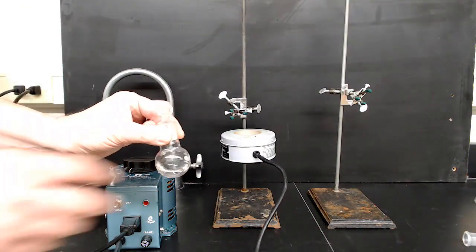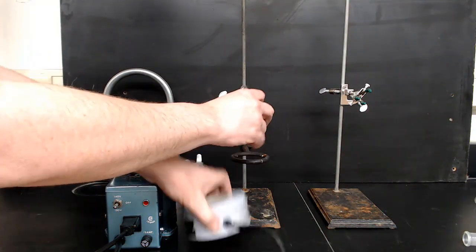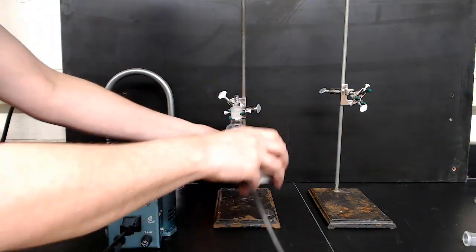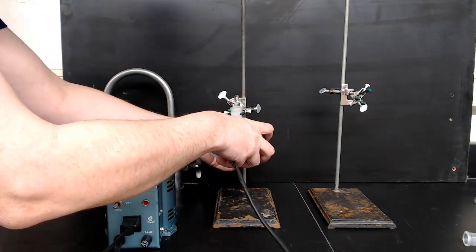Here's the flask we're going to distill from. Clamp that securely to the ring stand, and then put the heating mantle underneath, making sure there's firm contact between the bottom of the mantle and the flask.